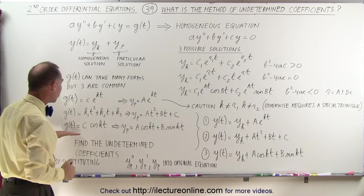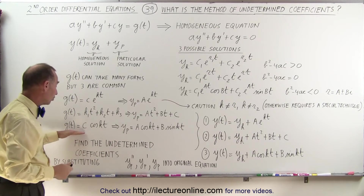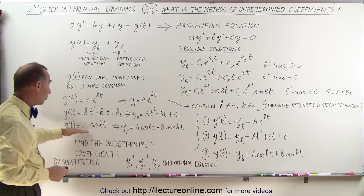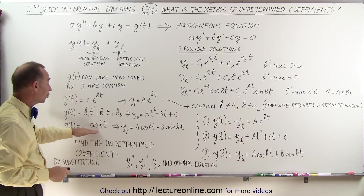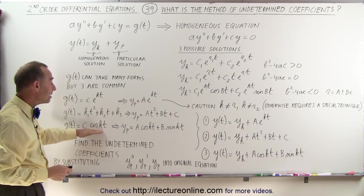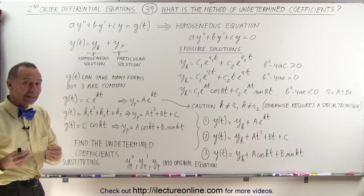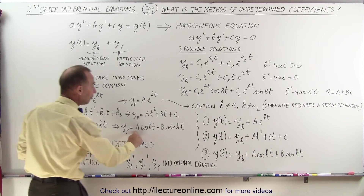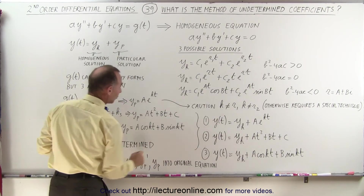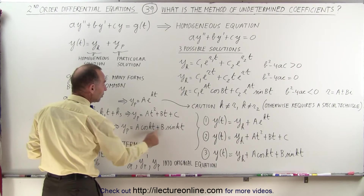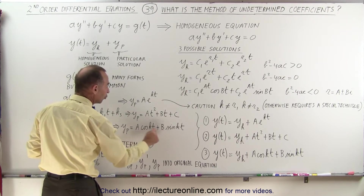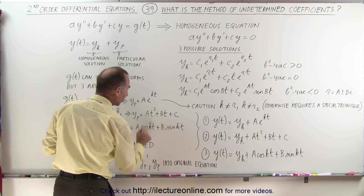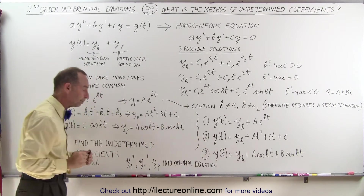If it's a trigonometric function — let's say c times the cosine of kt — then we know that the particular solution will have this form, and we'll have to find a and b, those two undetermined coefficients.